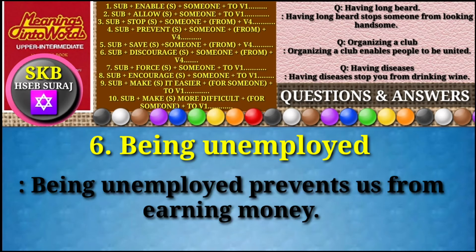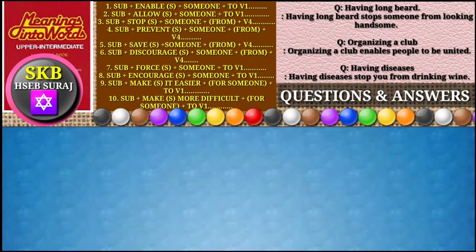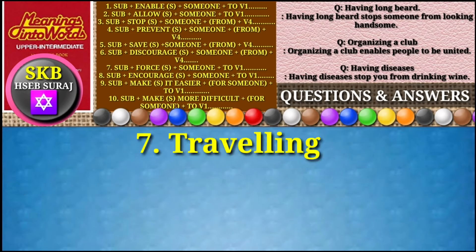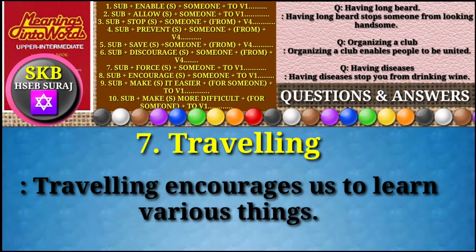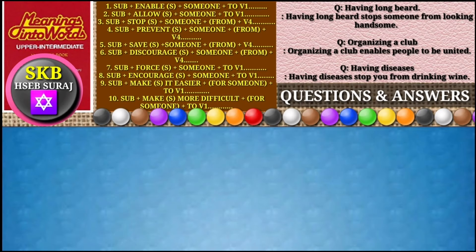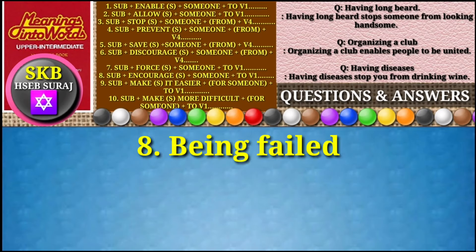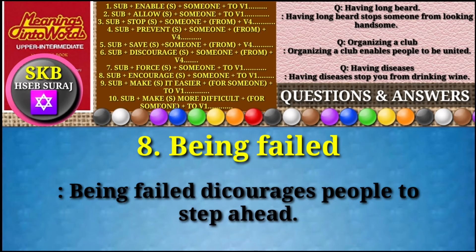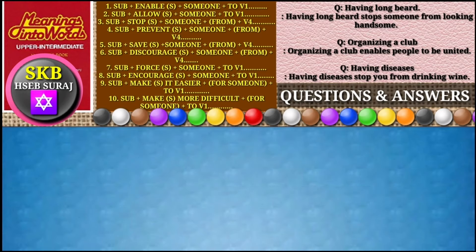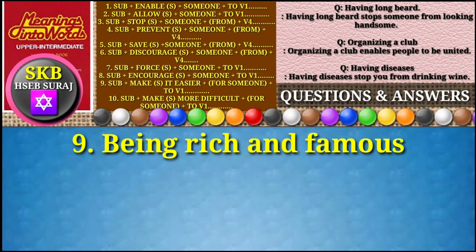Question number five: 'having a freezer.' Answer: Having a freezer allows us to keep food fresh. Question number six: 'being unemployed.' Answer: Being unemployed prevents us from earning money. Question number seven: 'traveling.' Answer: Traveling encourages us to learn various things. Question number eight: 'being failed.' Answer: Being failed discourages people from stepping ahead.